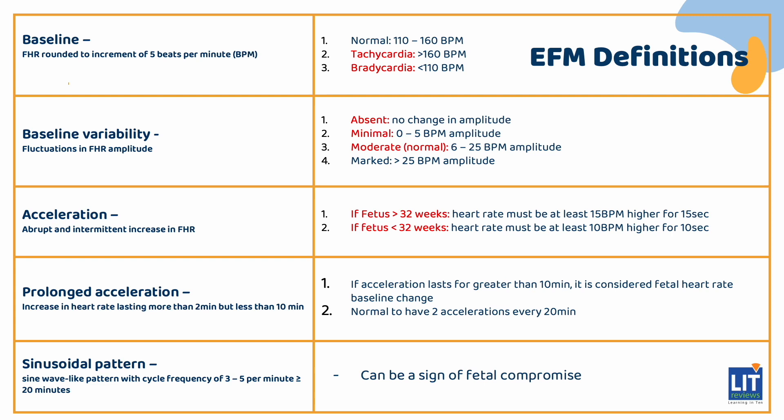Heart rate accelerations are an abrupt and intermittent increase in the fetal heart rate, with onset to peak occurring in 30 seconds or less. If the fetus is greater than 32 weeks, the increase must be at least 15 beats per minute for 15 seconds. If less than 32 weeks, the increase must be 10 beats per minute for 10 seconds. A prolonged acceleration lasts greater than 2 minutes but less than 10 minutes; if greater than 10 minutes, it is a baseline change. It is normal to have at least 2 accelerations every 20 minutes. Sinusoidal patterns — a sine wave-like pattern with a frequency of 3 to 5 cycles per minute for greater than 20 minutes — can be a sign of fetal compromise.